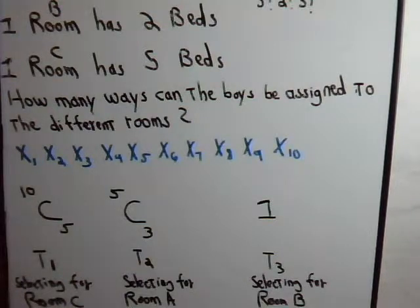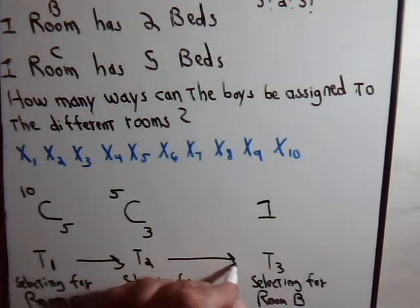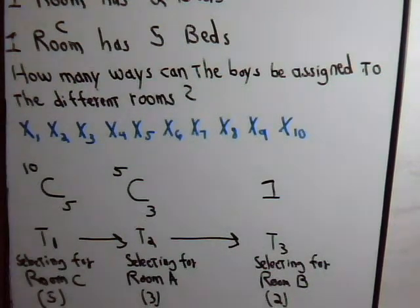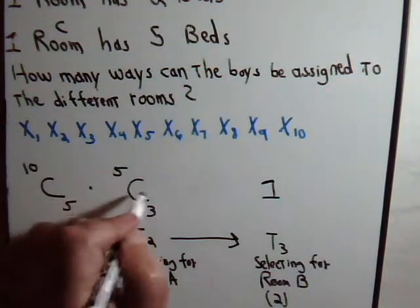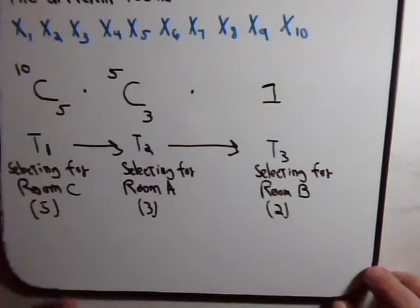So now, using the counting principle, if we perform task T1, then T2, then T3, the total number of ways we can do that is this, times this, times one. And let's see what this gives us.